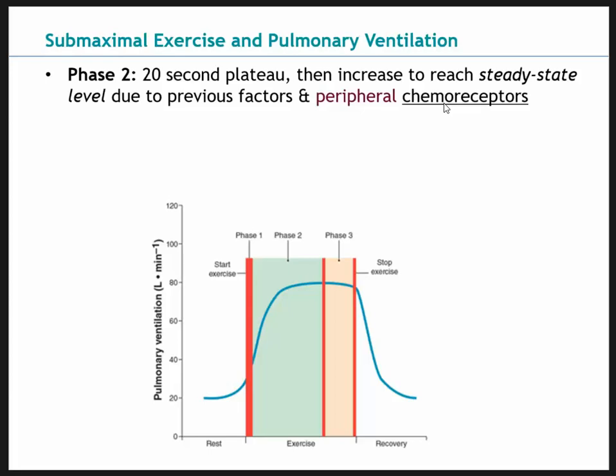The peripheral chemoreceptors — the carotid bodies — respond to chemical changes going to the body and head. They ensure blood is not deficient in hydrogen, and that there's not too much CO2. These receptors increase pulmonary ventilation, until we eventually hit that plateau at steady state.